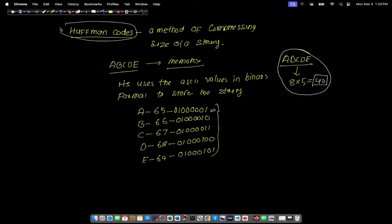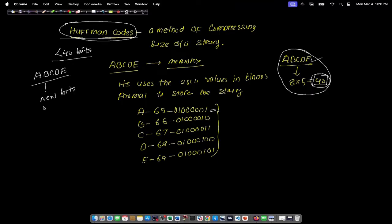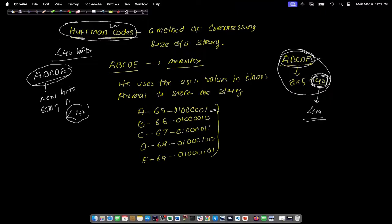To store the string ABCDE, the computer needs 8 multiplied by 5, which equals 40 bits. However, if we store it according to the Huffman code, it will take less than 40 bits. Huffman code derives another sequence of bits for these five characters, generating a new bit string to represent ABCDE which will be less than 40 bits. That is the main purpose of Huffman code and that is why it is called a compression technique.